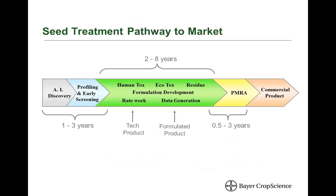A quick note on what it takes to get a seed treatment product to market: I work in the green phase — development and characterization. Before anything comes to me from Germany, it's already been evaluated for a couple of years by the discovery group in Monheim. Depending on complexity, it may take two to eight years to fully characterize a brand new active ingredient; two years might cover moving an active into a new formulation or crop, while eight years is more for a completely new active. Once submitted, the Pest Management Regulatory Agency (PMRA) needs time to review all the data and award registration. In total, you can be looking at upwards of 14 years from lab bench discovery to the product being in your hands as a commercial product.